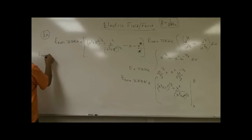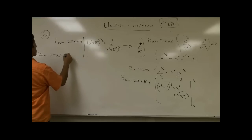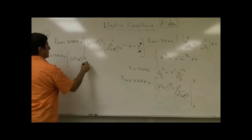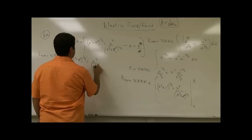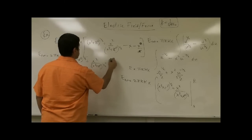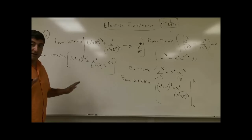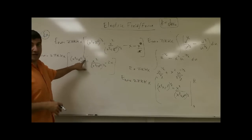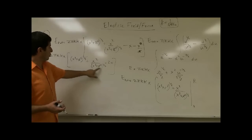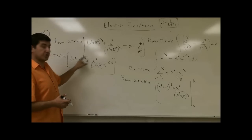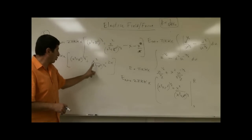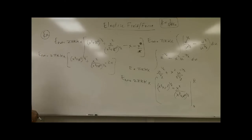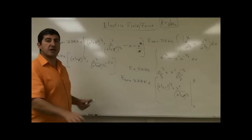So E total equals 2 pi k kappa x times [(x squared plus R squared) to the one half plus x squared over (x squared plus R squared) to the one half, minus 2x]. In terms of units, each term — (x squared plus R squared) to the one half, x squared over a meter, and 2x — all have units of meters, so the units are consistent.